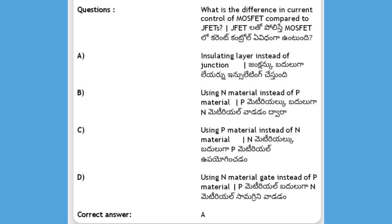What is the difference in current control of MOSFET compared to JFET? Options: insulating layer instead of junction, using N material instead of P material, using P material instead of N material, using N material gate instead of P material. The answer is A, insulating layer instead of junction.